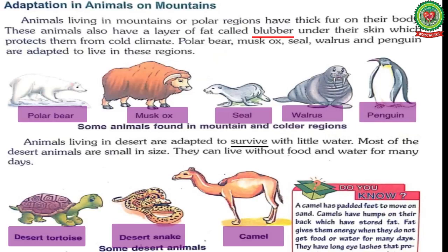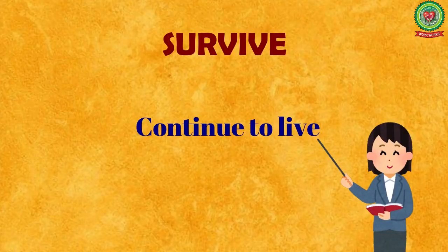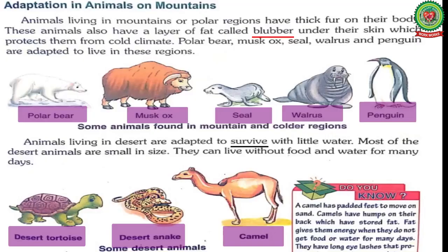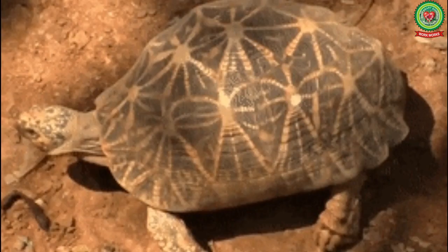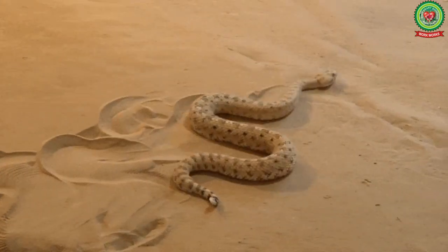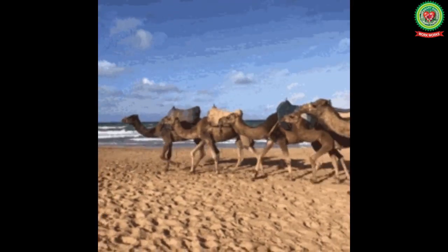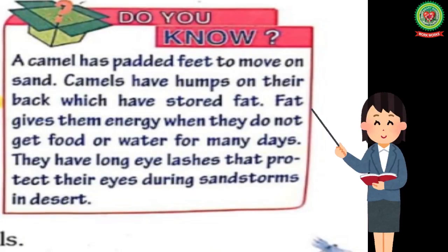Underline the word survive and write down its meaning: continue to live. Most of these desert animals are small in size. They can live without food and water for many days. The examples of desert animals are desert tortoise, desert snake, and camel. Let us read the 'Do You Know' section.